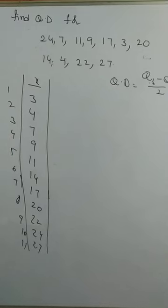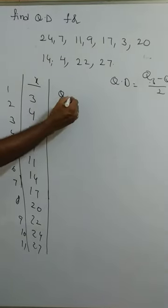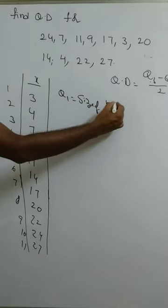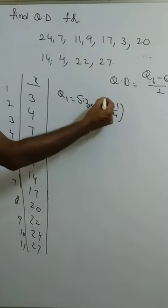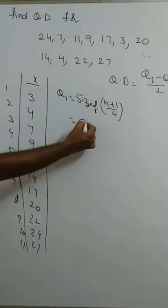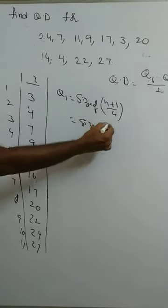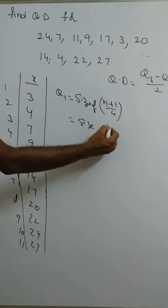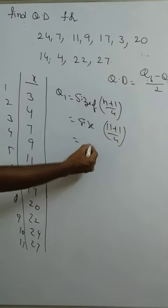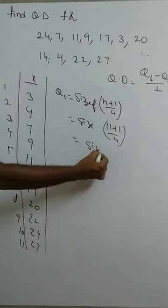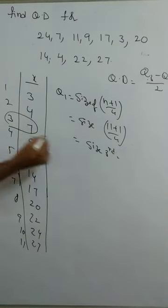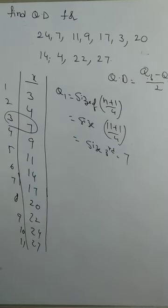Q1 means 25% of the given data. The formula for Q1 is the size of the (n+1)/4 th observation. With n = 11, that is the size of the (11+1)/4 = 12/4 = 3rd observation. The 3rd observation is 7, so Q1 = 7.